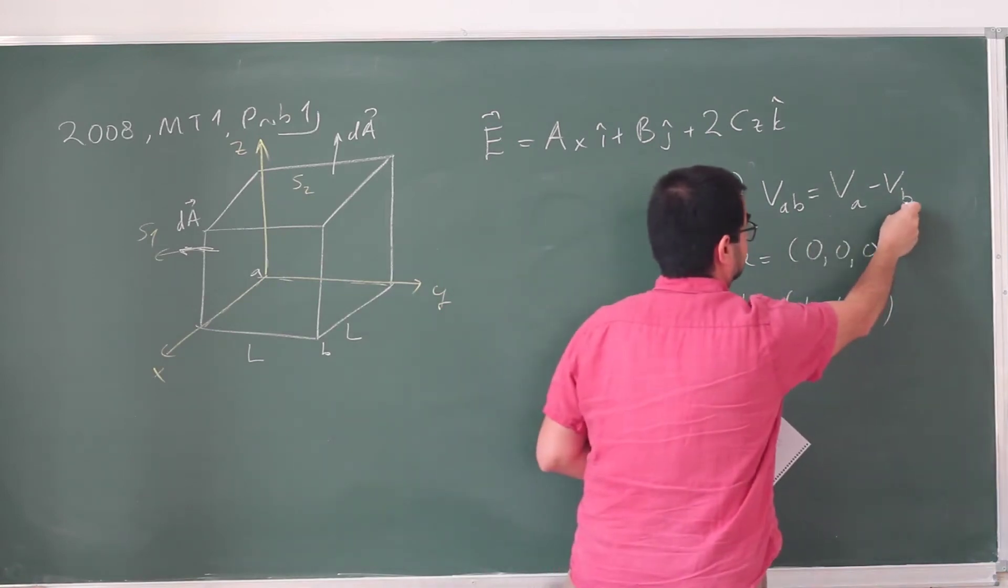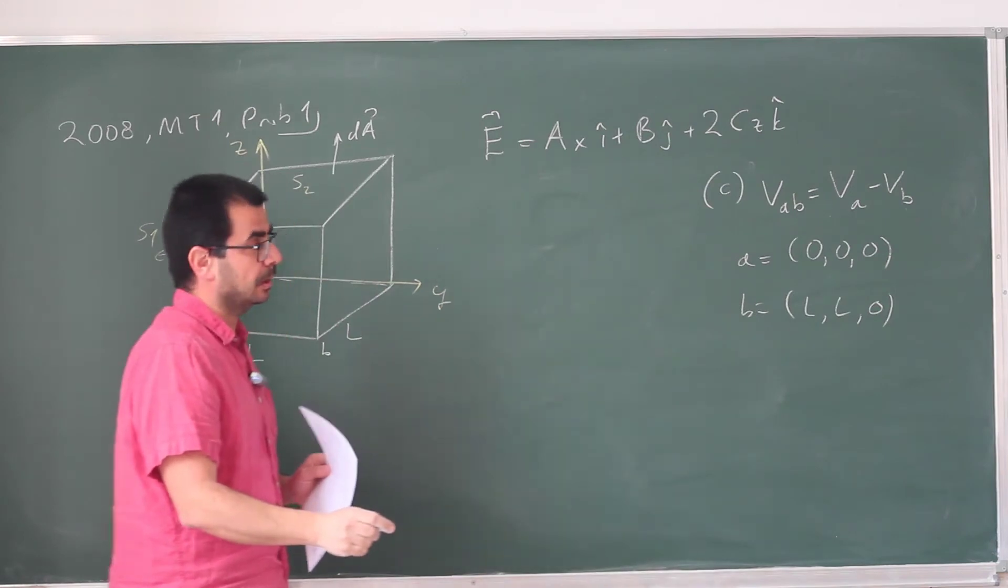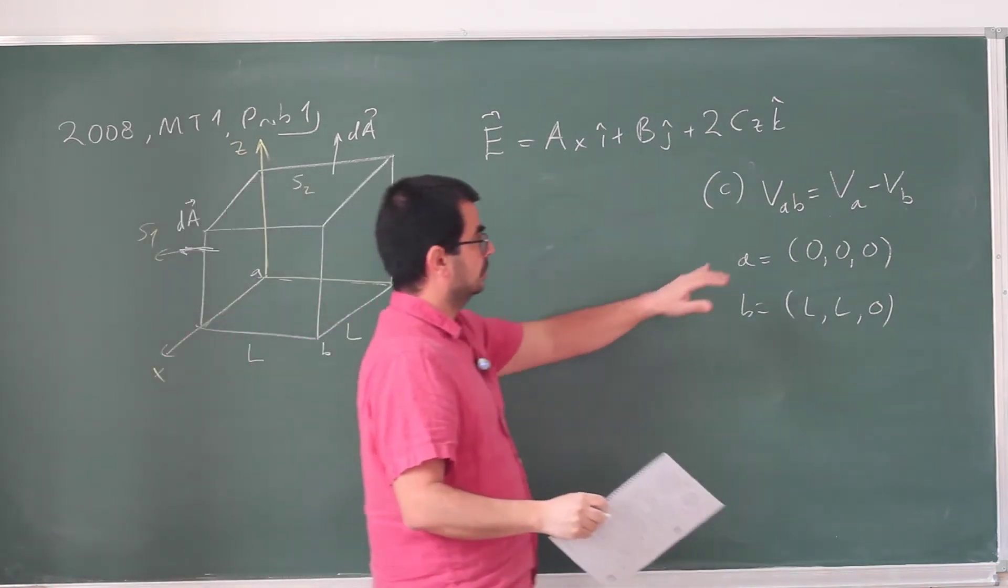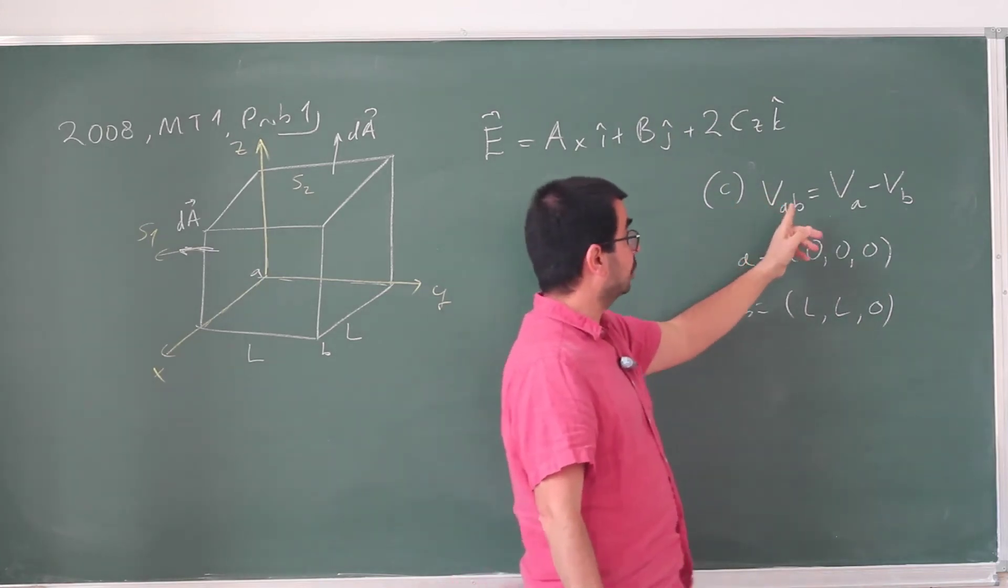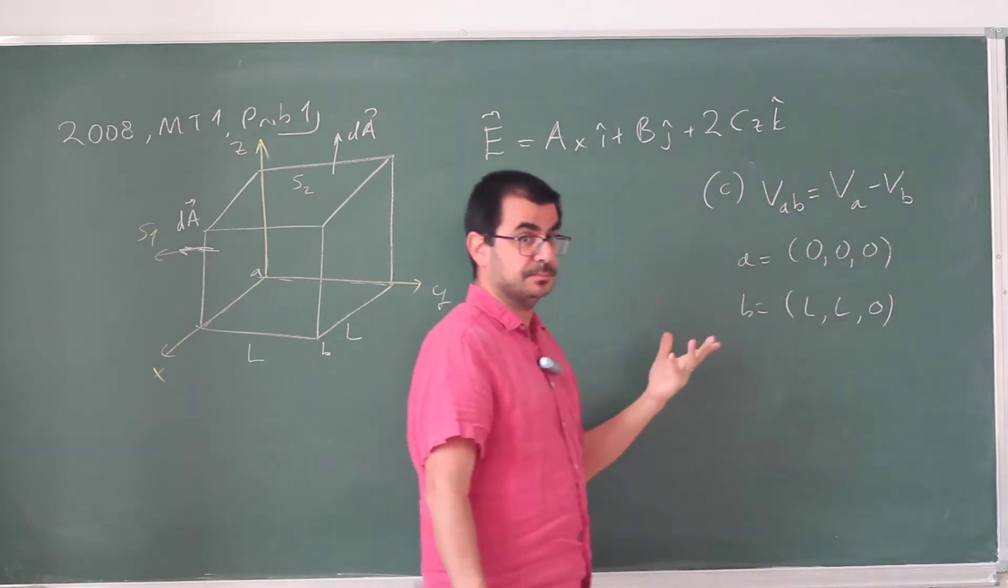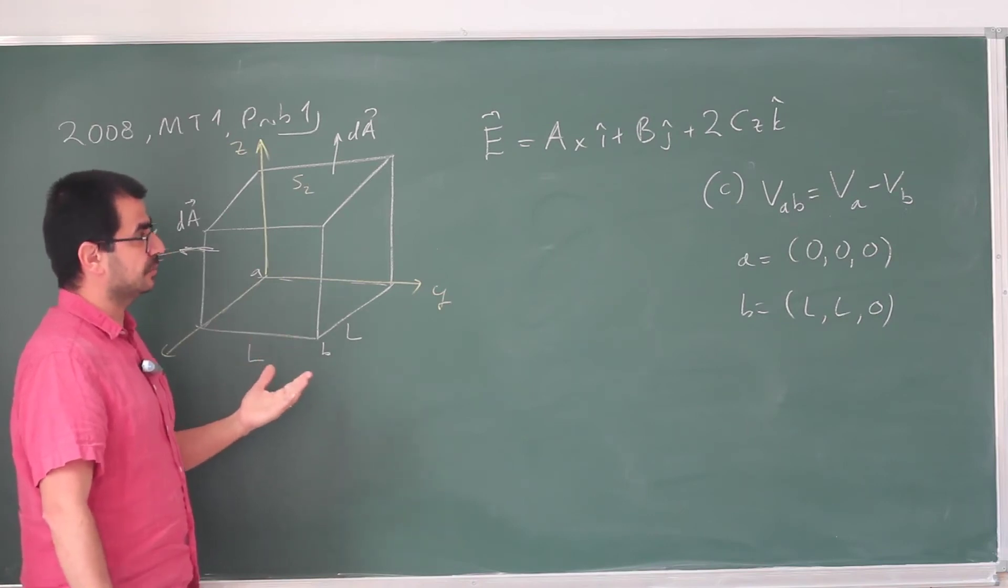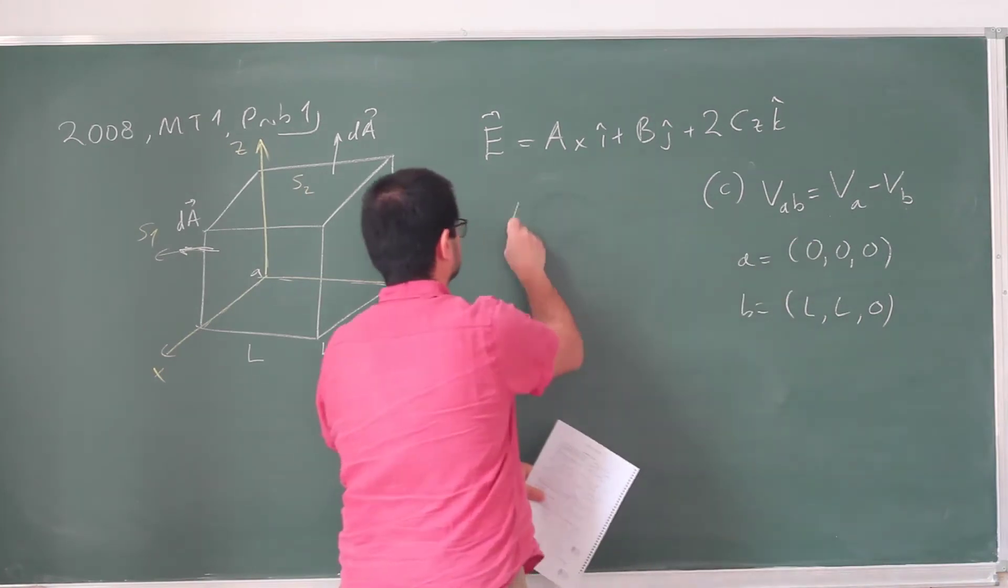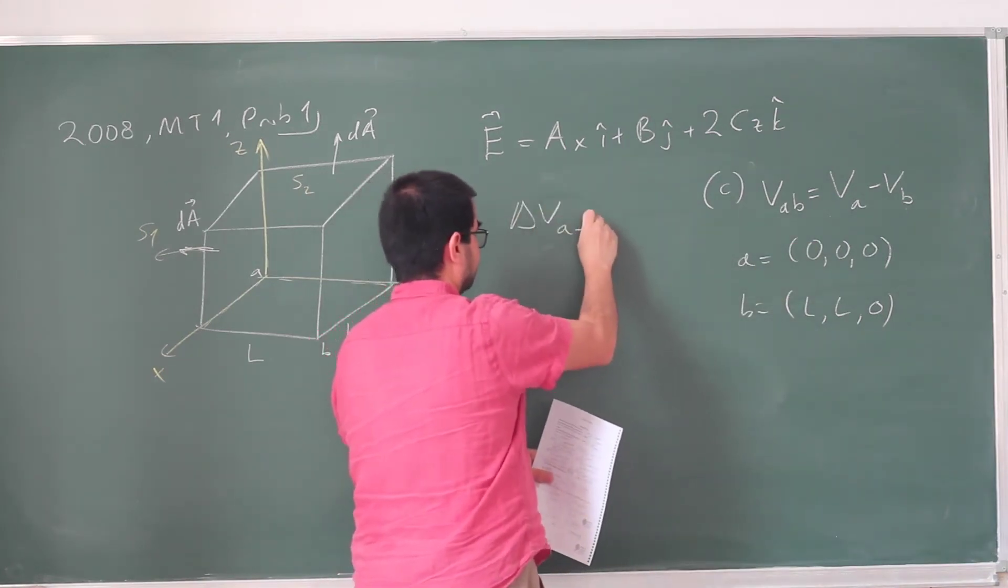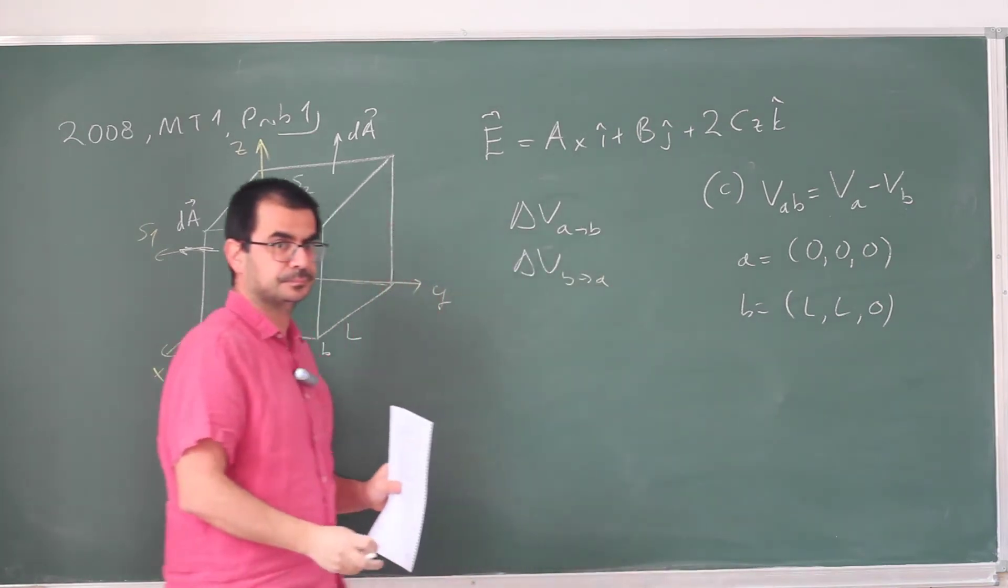Now first of all, I want to comment on this notation. This is fine, right? This is the potential difference between VA and VB. But this notation is horrible. First of all, this is not a potential at a point, so this should be delta V. And what is this? Is this going from A to B or B to A? Because that's important. That's how you're going to write the limits of your integral. But what does this tell you? Does this correspond to delta V from A to B, or is this delta V from B to A?